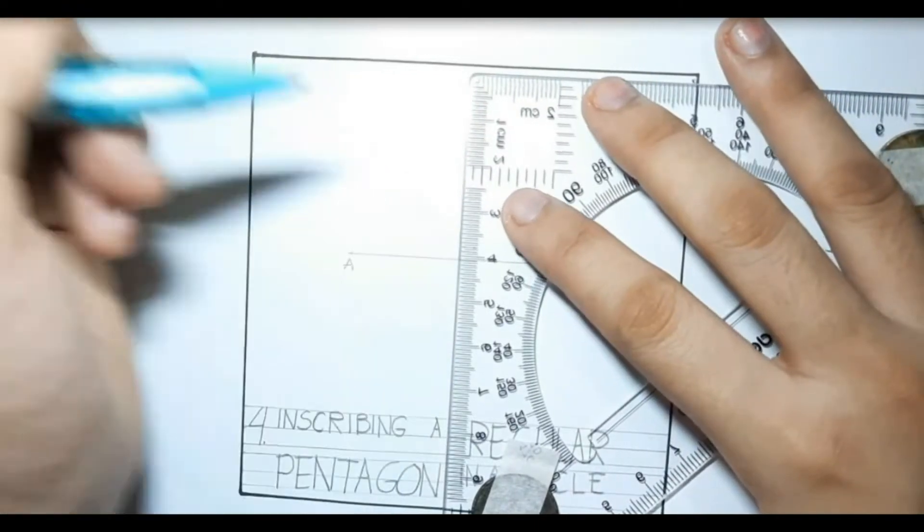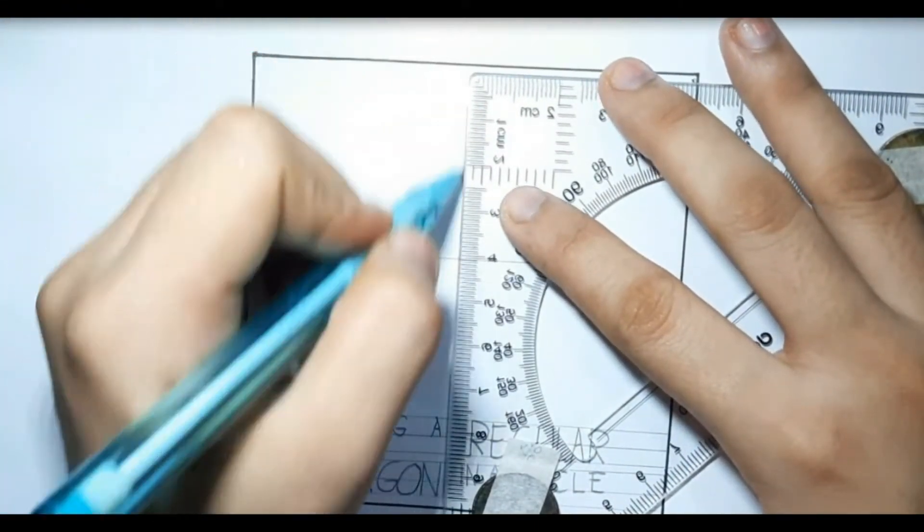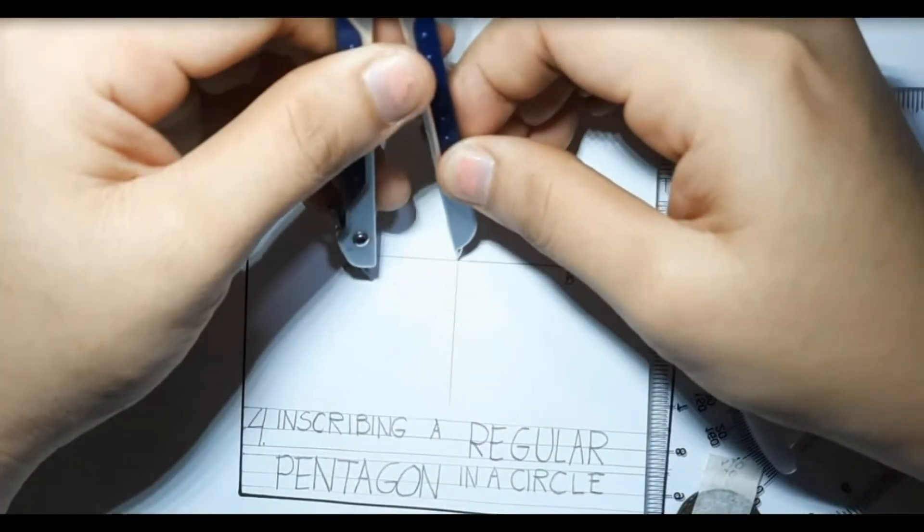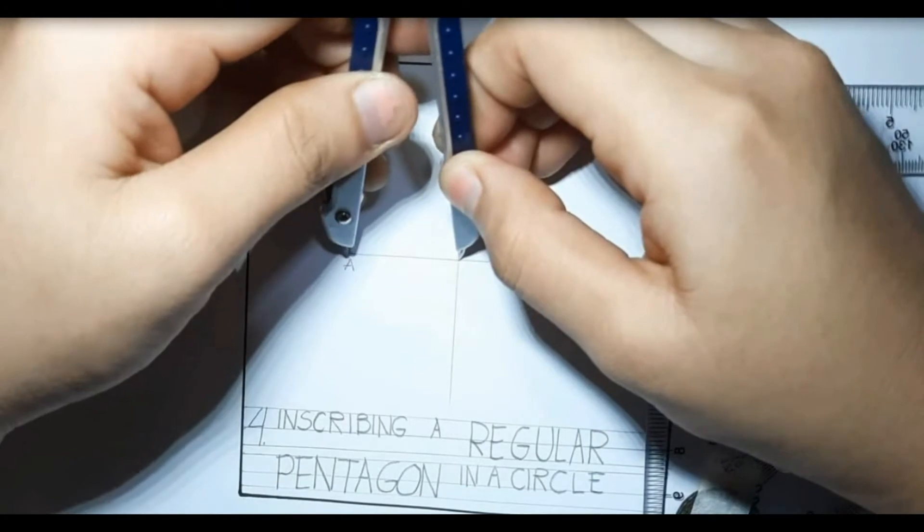From the center of line AB, create a vertical line. From the center of it, draw a circle.